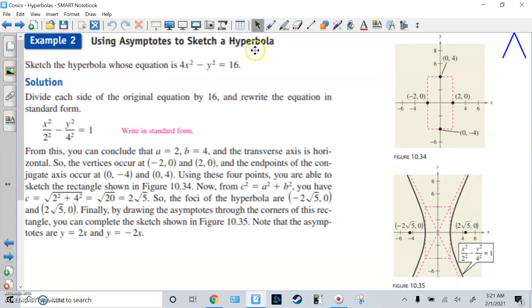Using asymptotes, sketch a hyperbola. Sketch the equation 4x squared minus y squared equals 16. So first, we have to put it in standard form. We want 1 on the right, so we divide both things by 16. And reduce, and we get x squared over 2 squared minus y squared over 4 squared equals 1. We see that this is horizontal because x squared is positive. We see a is 2, b is 4.